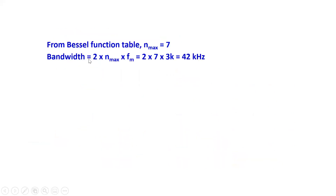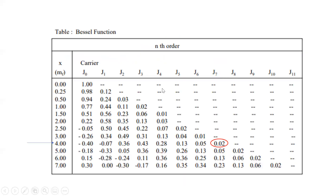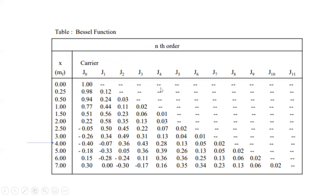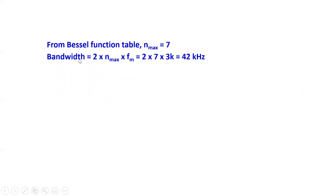Now I apply the Bessel function bandwidth formula: BW = 2 × n_max × fm. That is 2 times 7 times 3 kilohertz — in case you've forgotten, fm was 3 kilohertz from the question. So I calculate my Bessel bandwidth as 42 kilohertz. Hopefully this is useful for you guys. I'd like to wish you all the best and good luck for tomorrow's paper. Take care!